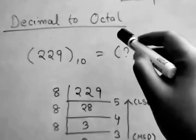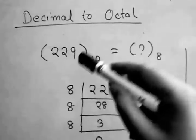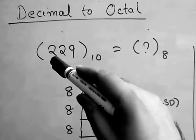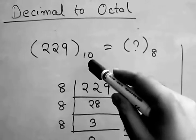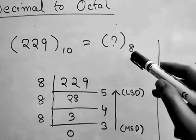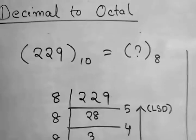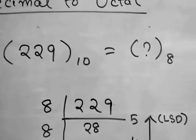Here we will do decimal to octal conversion. The number in decimal given is 229. We have to find the equivalent number in octal system.